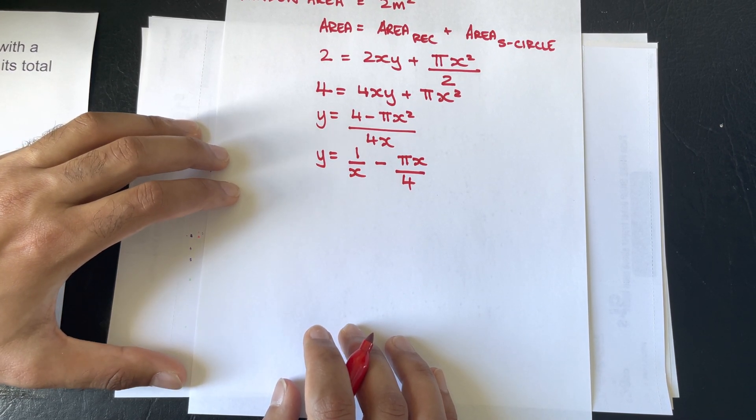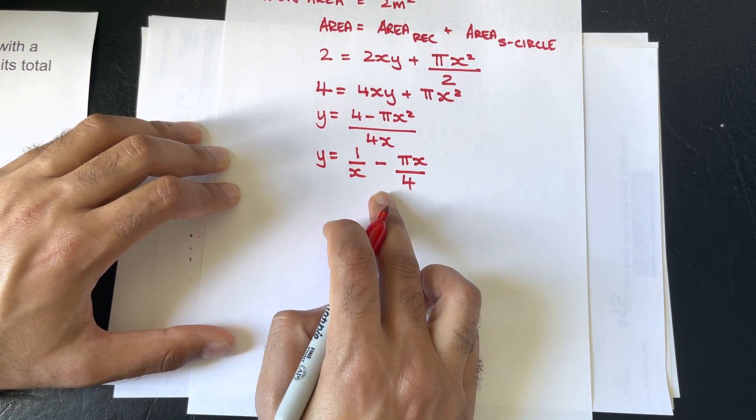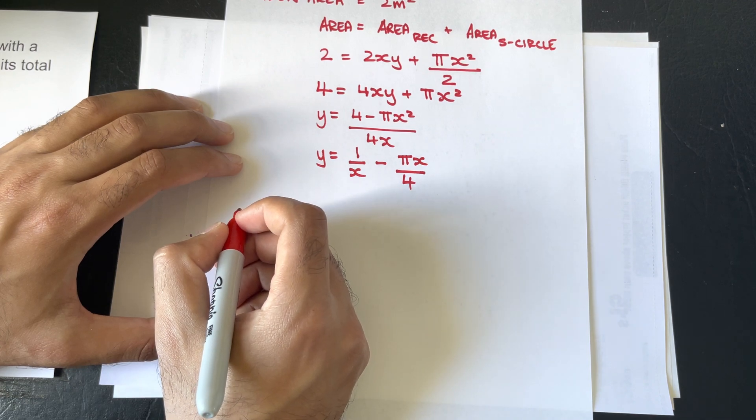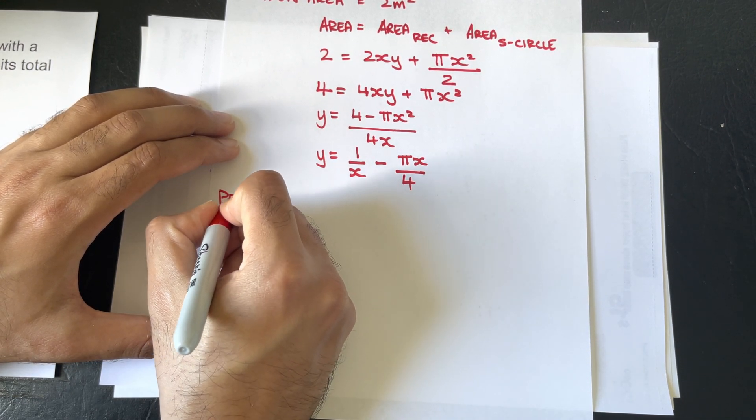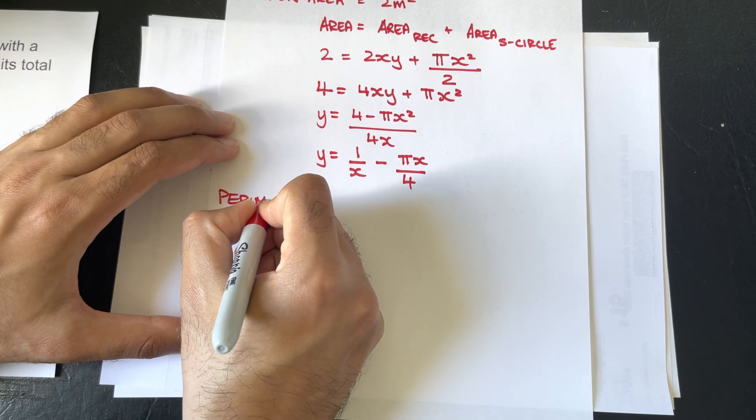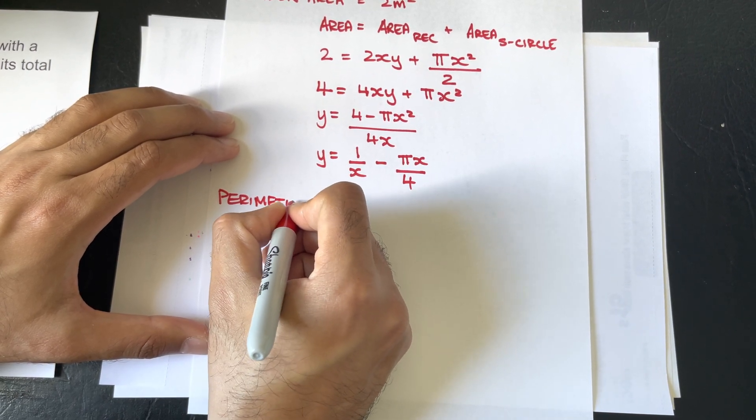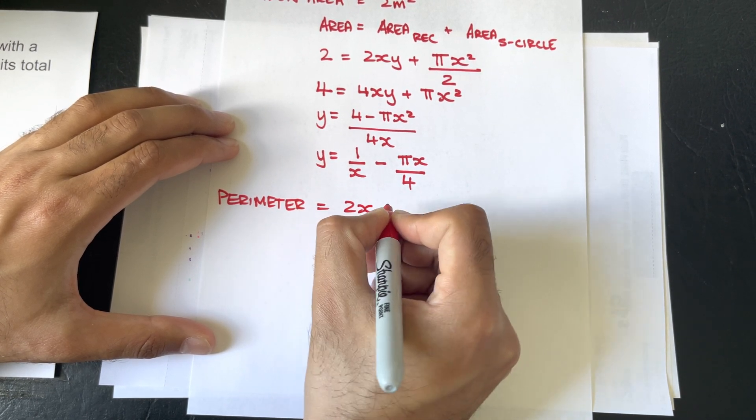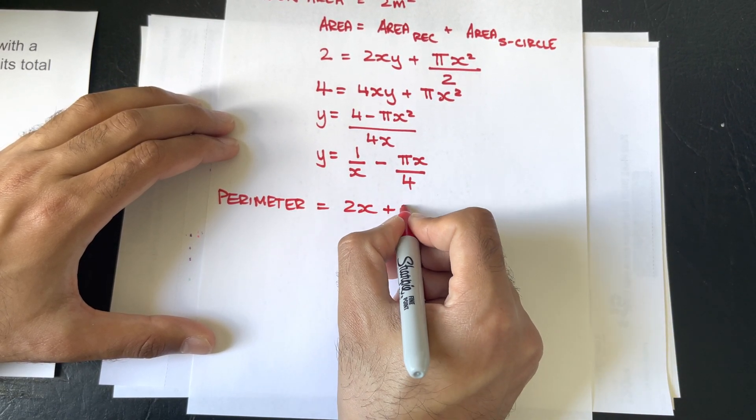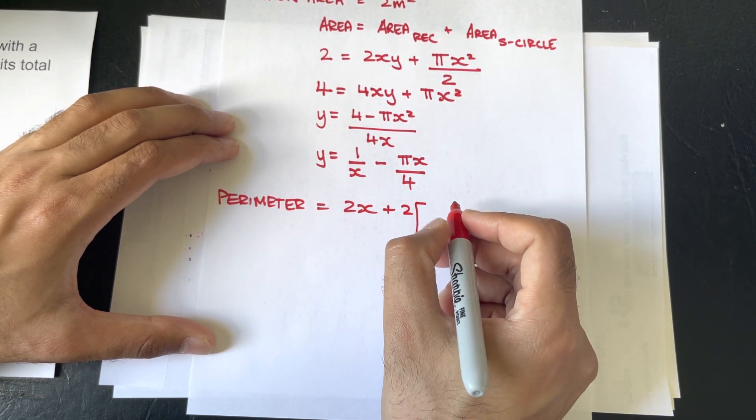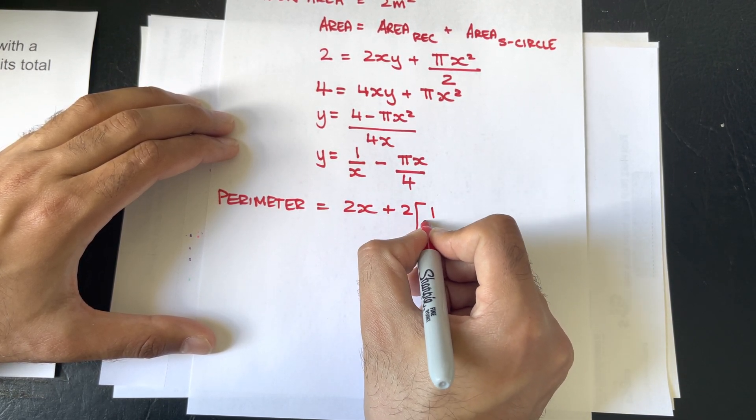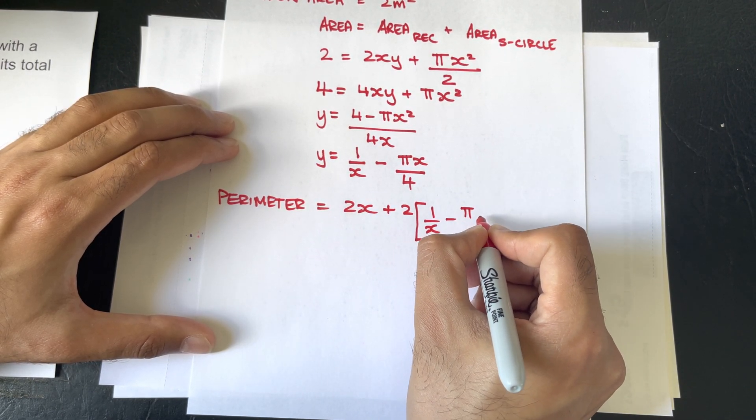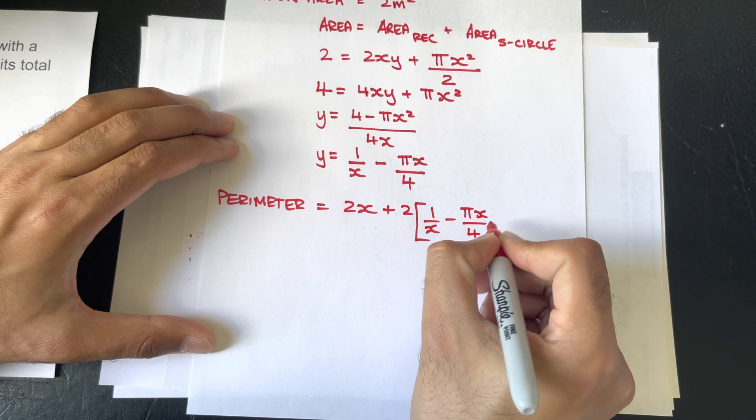And that is as far as you can go. So, our fourth step is to put the y function back into the perimeter of the window function. And therefore, the perimeter will equal 2x plus 2 being multiplied by y, which we know is 1 over x minus πx over 4, and then the πx, of course, goes with it.